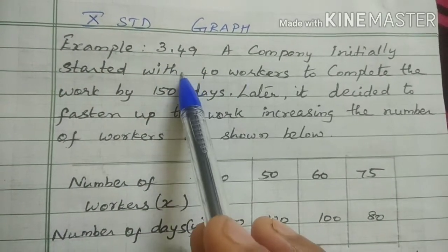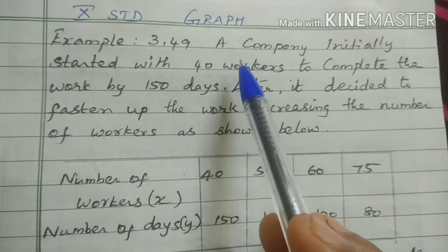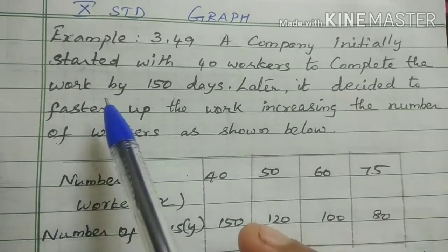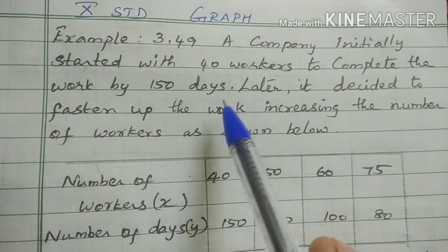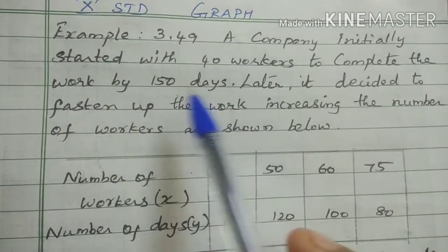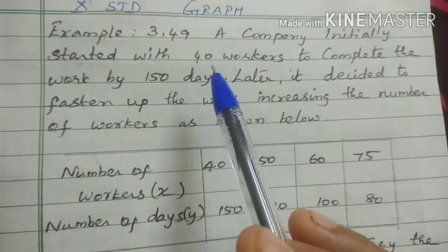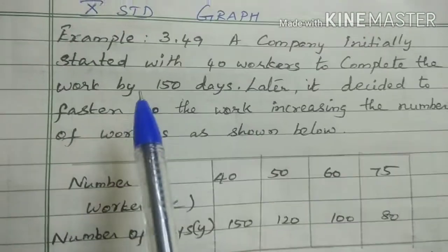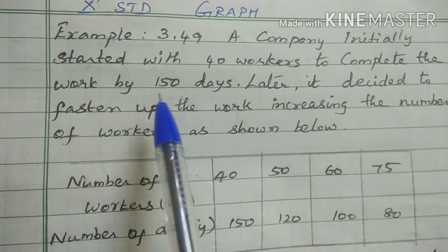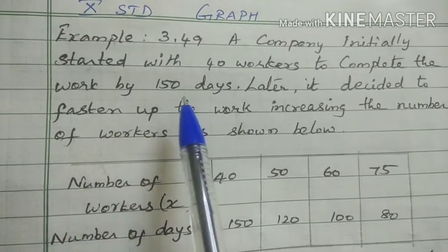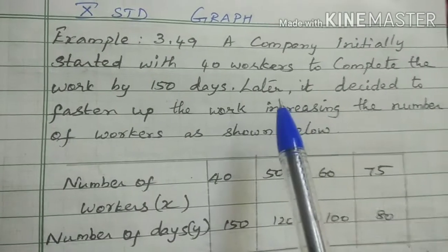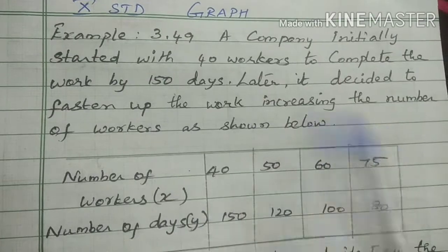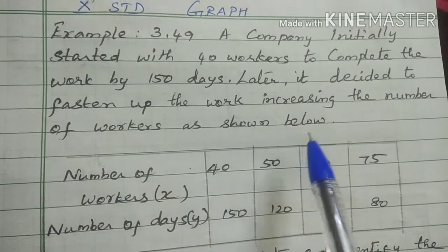Example 3.49. A company initially started with 40 workers to complete the work in 150 days. Later, it decided to fasten up the work, increasing the number of workers as shown below.